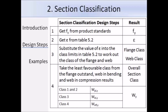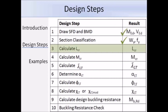Step 4 tells us to take the least favourable class worked out and use that as the overall section class. The value of W_Y to use will depend on the class: for class 1 and 2 we use W_pl,Y (the plastic section modulus); for class 3 sections we use W_el,Y (the elastic section modulus); and for class 4 sections we use W_eff. After classifying the section, we note the value of the yield strength F_Y and the value of W_Y which we need to use.